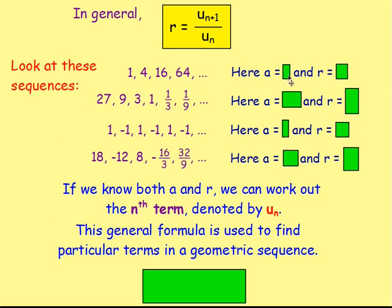So here, a is going to be one — that's your first term. And the value of r is just going to be four. You can easily tell that you're multiplying by four every time. Or you could just do four divided by one, which gives you four. Or sixteen divided by four, or sixty-four divided by sixteen. Either way, you get a common ratio of four.